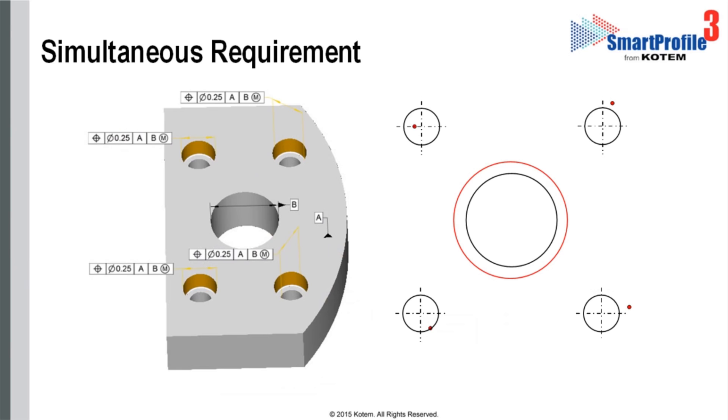Datum B is simulated at the maximum material boundary as shown by the M modifier. This part could be inspected by a hard gauge where the datum is simulated at the virtual condition. This gives mobility to the feature control frame.